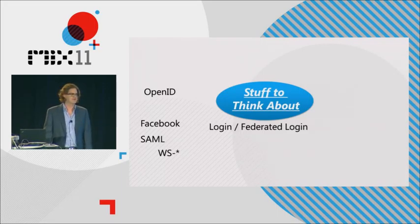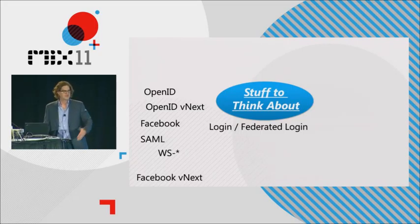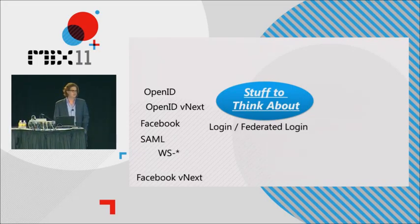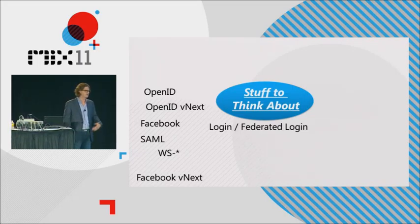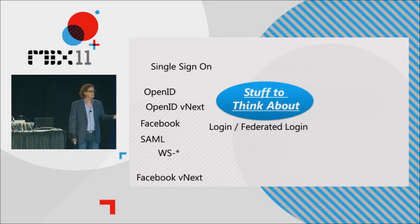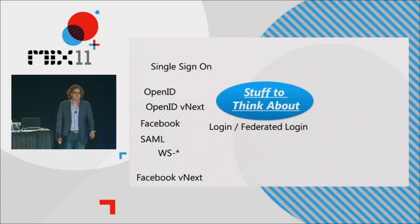You can't stop there because all these protocols version over time. When thinking about how to integrate with any of these, you have to think about vNext. What is OpenID vNext? There's a new working group spun up. Facebook has a tendency to change things - there was Facebook Connect, now they're on OAuth. You also have to think about single sign-on across multiple sites. Maybe you're building a set of sites, and how is a user going to be authenticated across all of those?